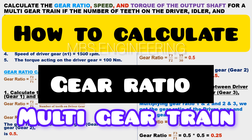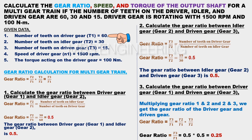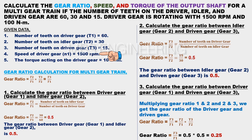We will learn how to calculate the gear ratio for the multi-gear train. For example: calculate the gear ratio, speed, and torque of the output shaft for a multi-gear train if the number of teeth on the driver, idler, and driven gear are 60, 30, and 15. The driver gear is rotating with 1500 RPM and 100 Nm. Given data: T1 equals 60, T2 equals 30, T3 equals 15, N1 equals 1500 RPM, and the torque acting on the driver gear equals 100 Nm.